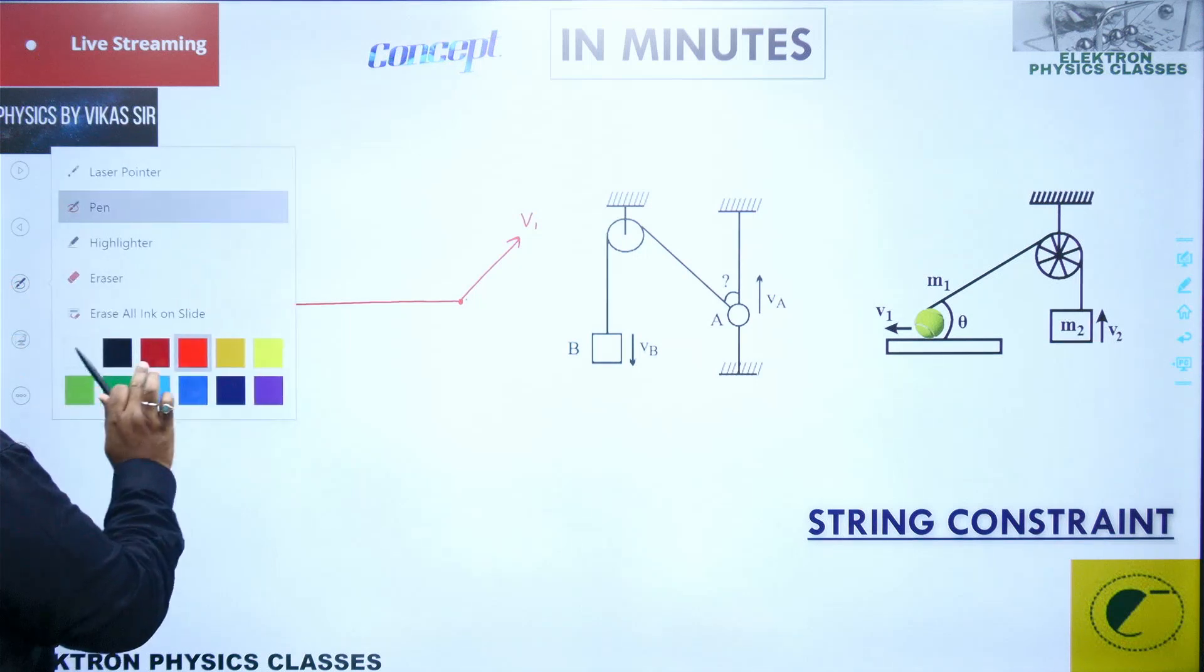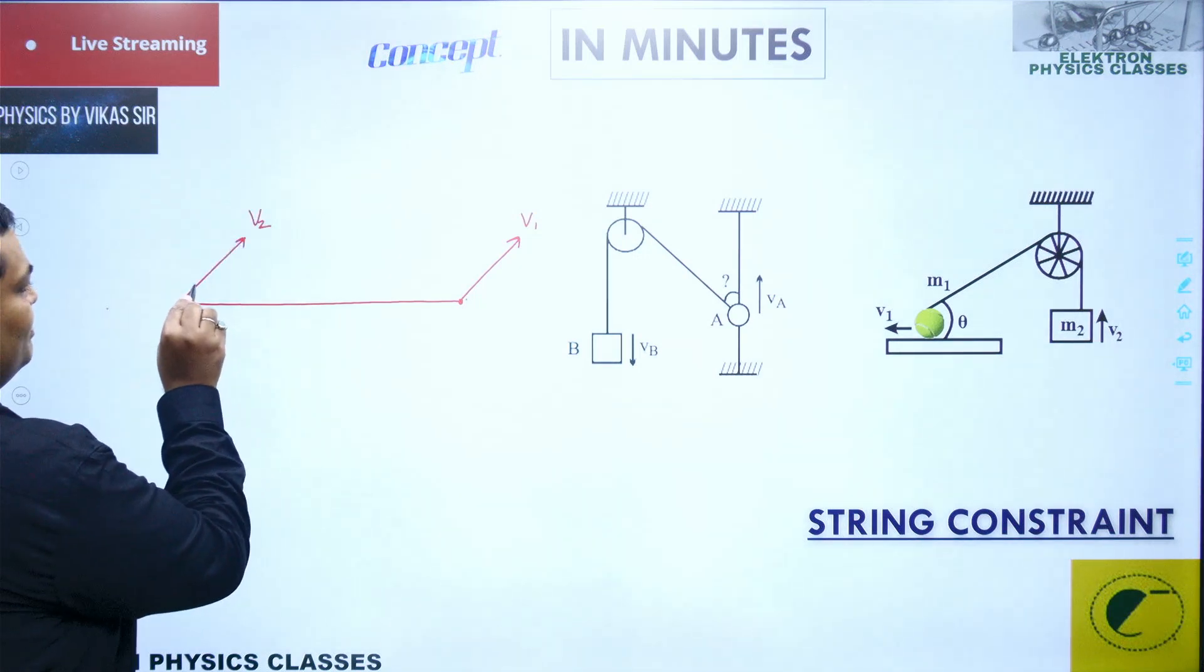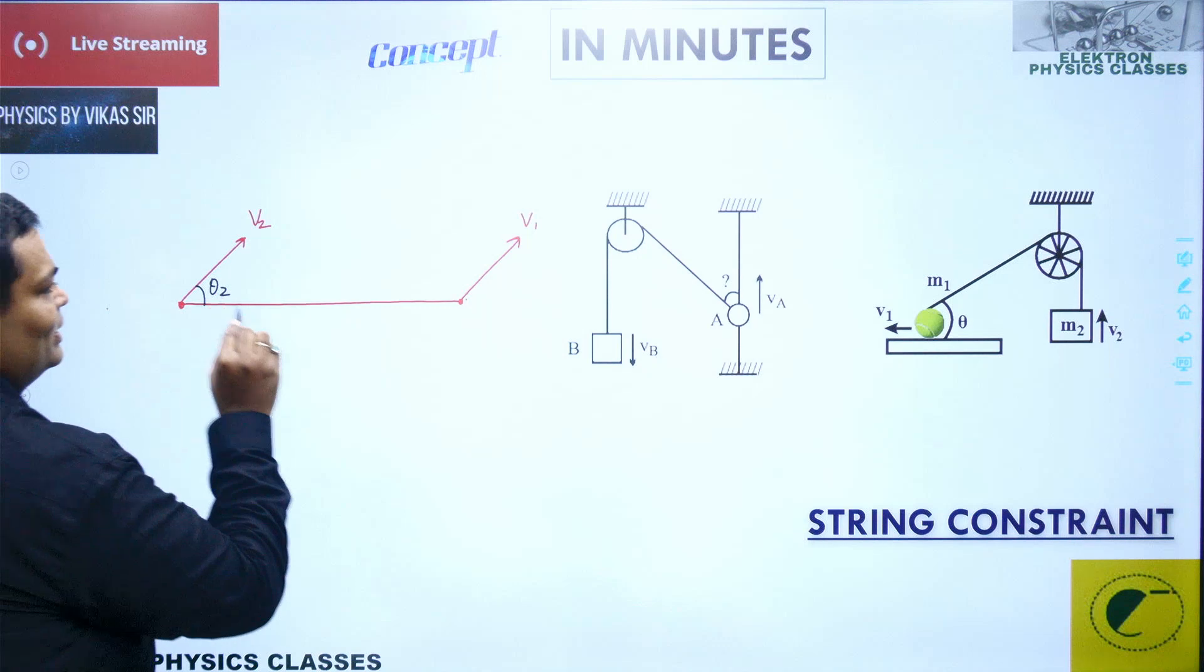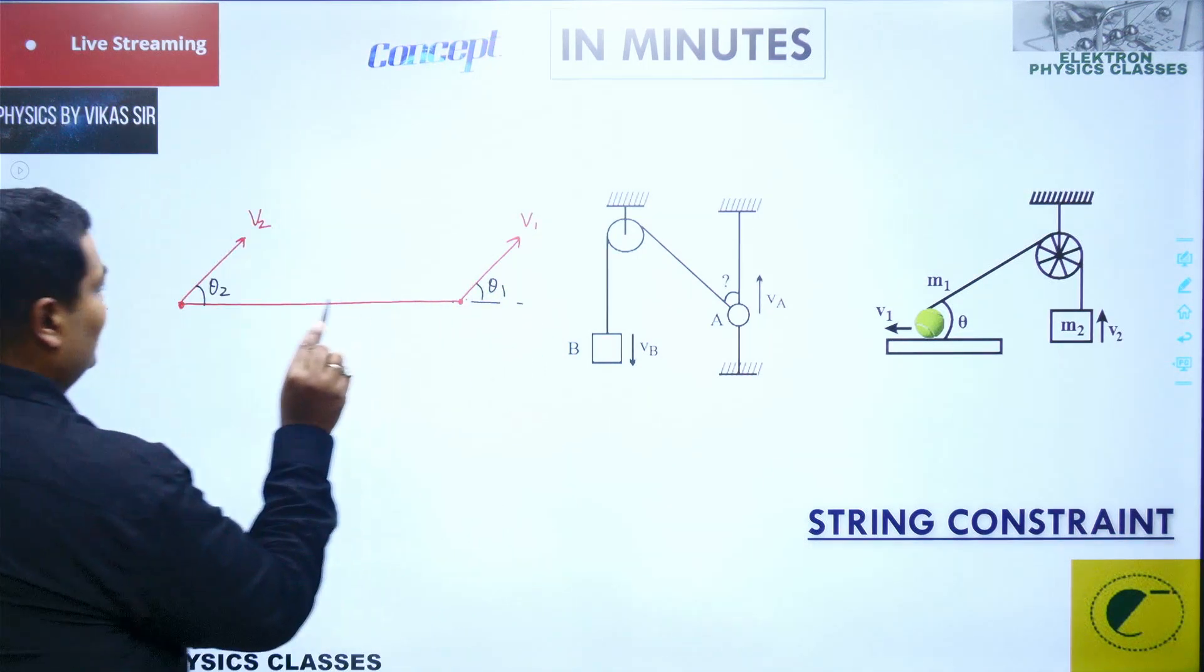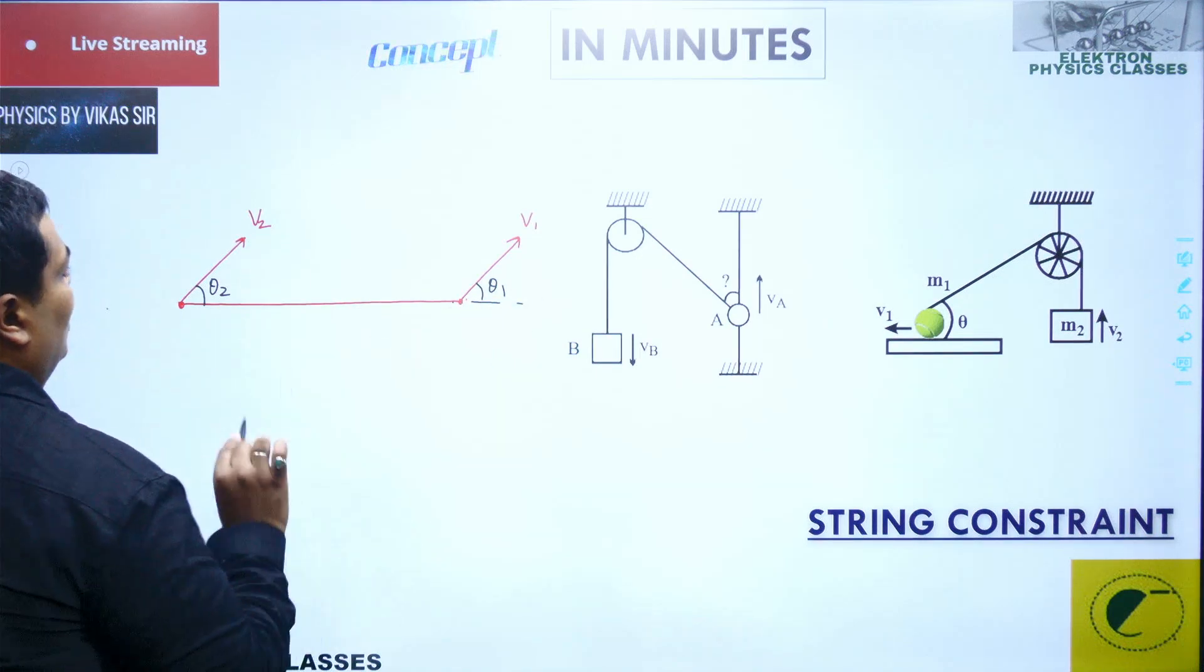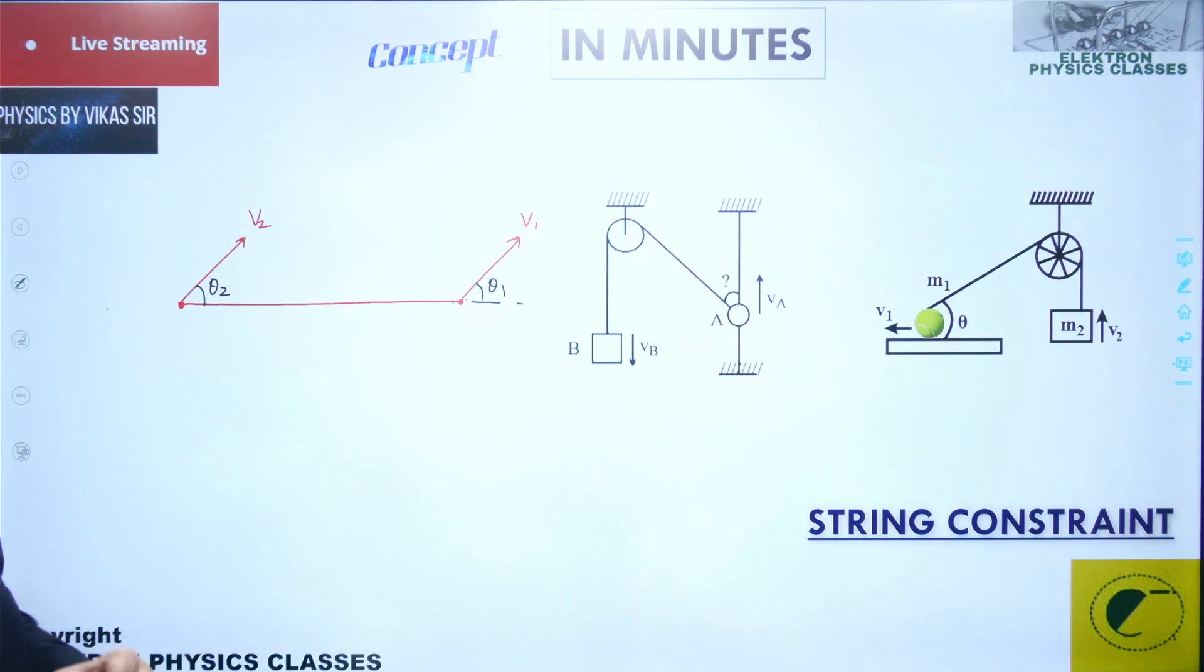the angles which these two velocities make with the string is theta 2 here and theta 1 here. These are angles the velocity vectors make with the string. Now for the string constraint to be valid, we need to have